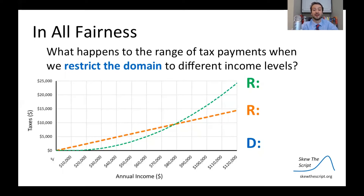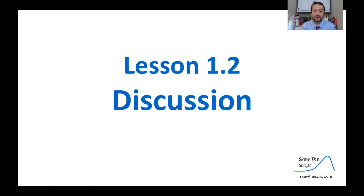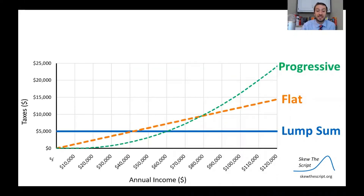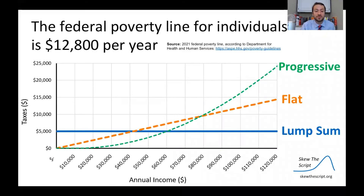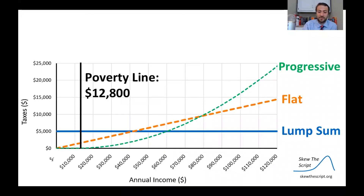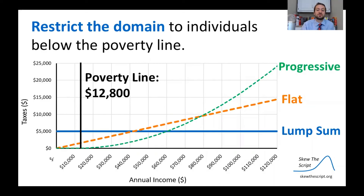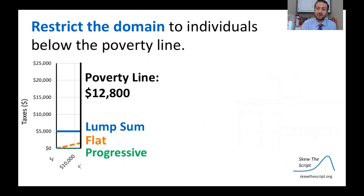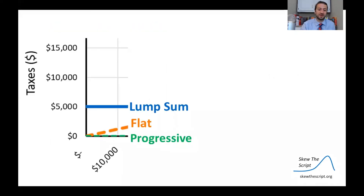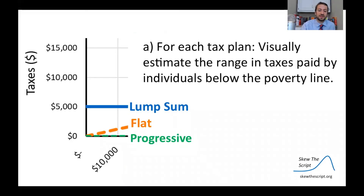Let's think about what happens to the range of tax payments when we restrict the domain to different income levels. The federal poverty line for individuals is currently defined as twelve thousand eight hundred dollars per year. We've drawn it on the chart and restricted the domain to individuals below this poverty line. Zooming in gives us a clearer picture. Your question is: for individuals below the poverty line, visually estimate the range in taxes paid under lump sum, flat, and progressive tax plans.